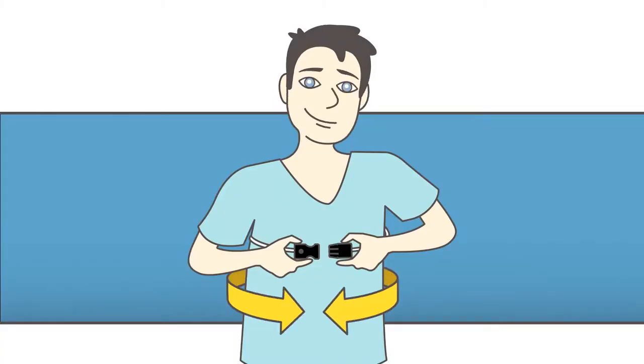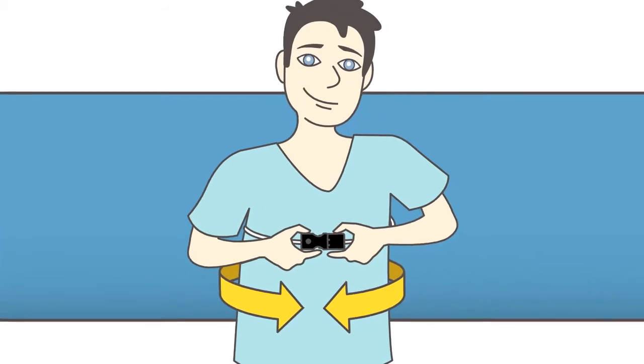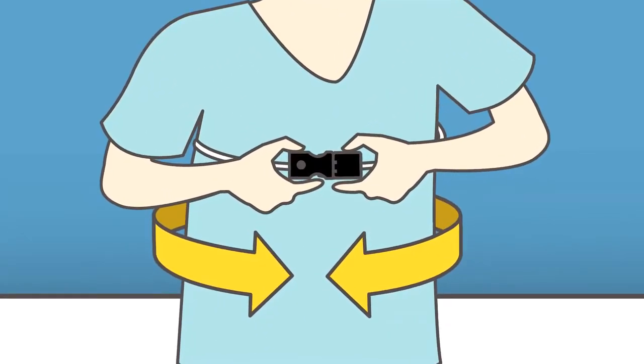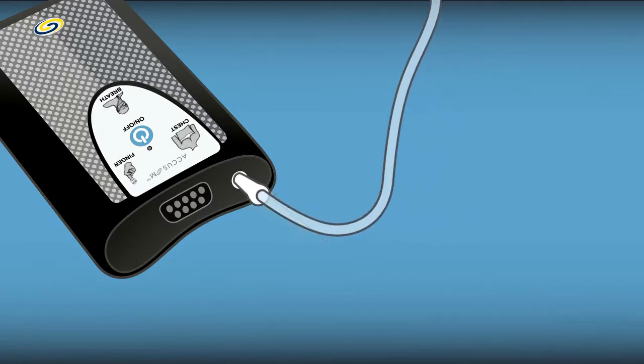First, wrap the chest sensor around your back and fasten the black clips together in front of your chest. Adjust the belt so it fits snugly under your breasts, then connect the other end to the Accusom.